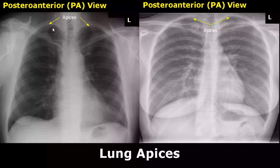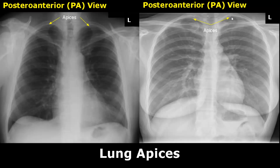The uppermost part of the lungs are the apices. The lung apex lies above the inferior margin of the clavicle, i.e., the collar bone. It is an important location and needs to be reviewed because some pathologies occur in this region.